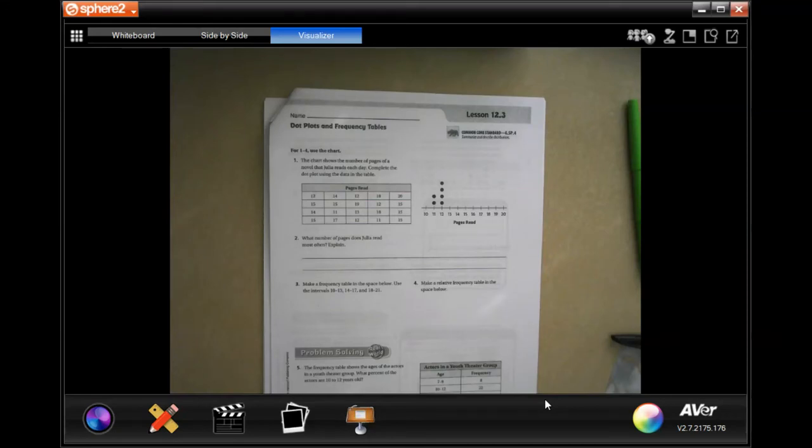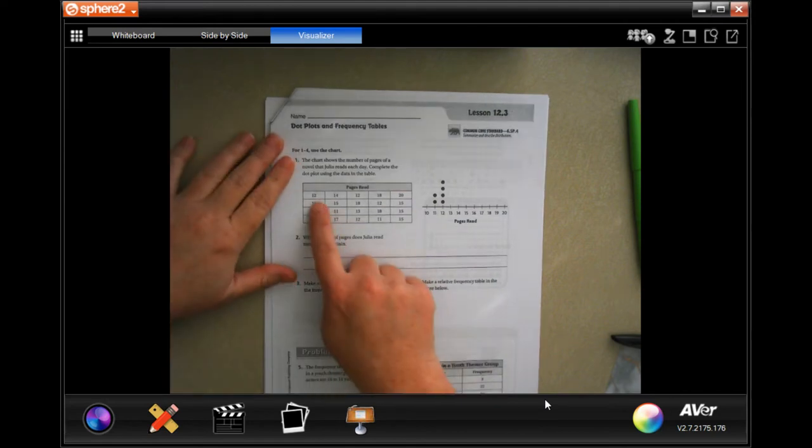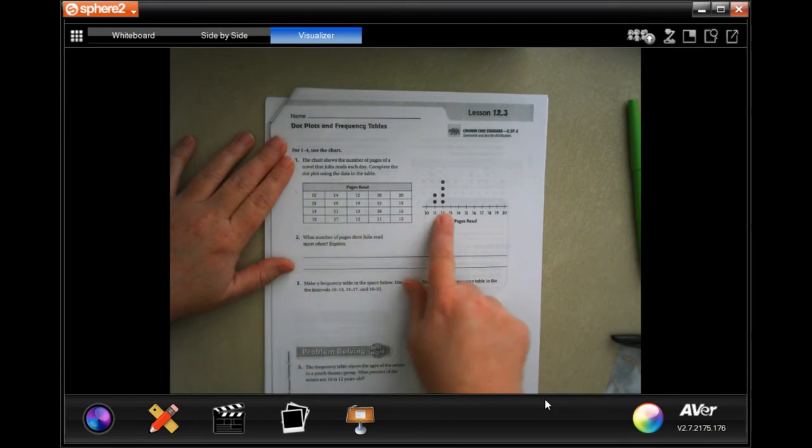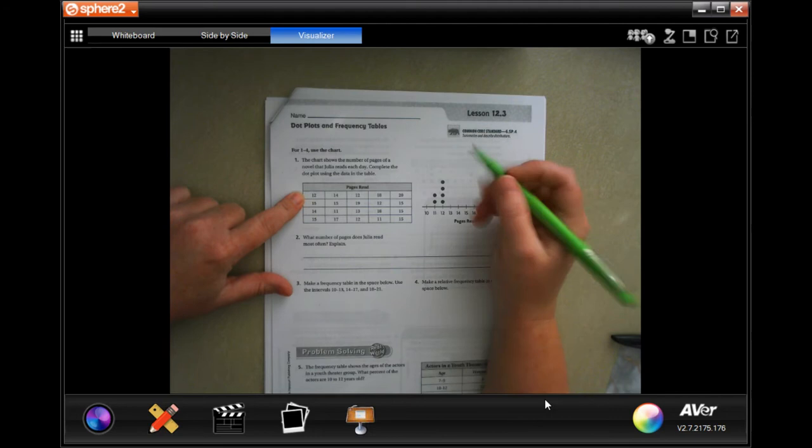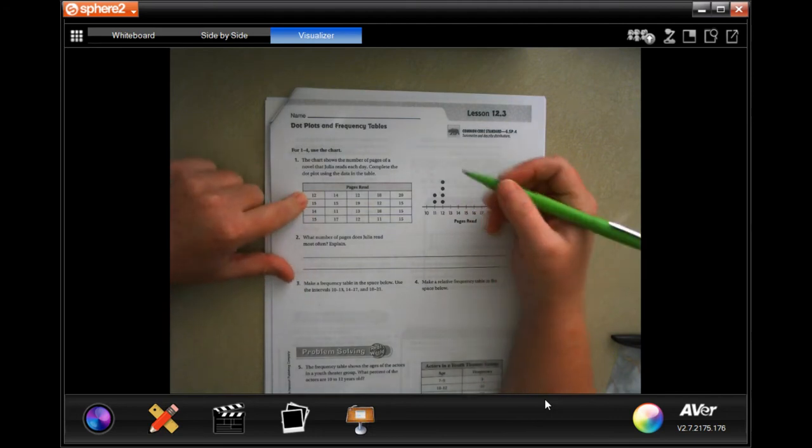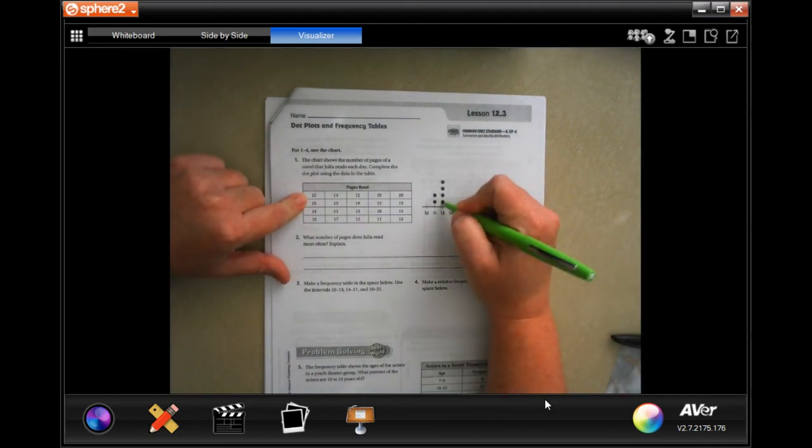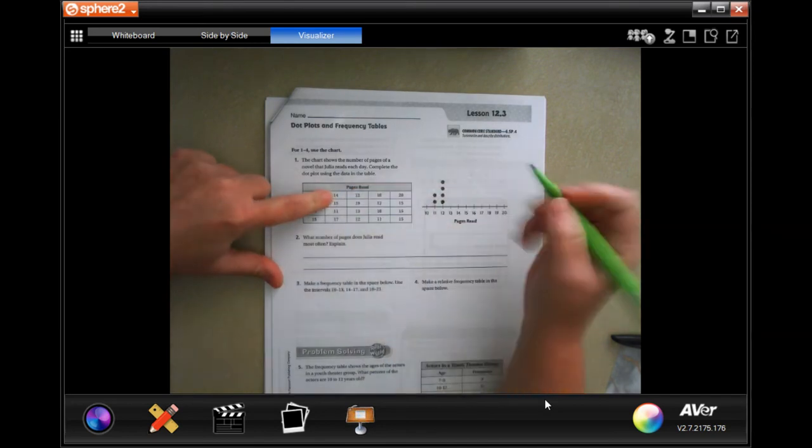Hey y'all, welcome to sixth grade chapter 12 lesson three. We're going to go ahead and get started. First, what we're going to do is go through here and put a dot for every data point that it gives us. Okay, so 12, well that would be this one, 14.